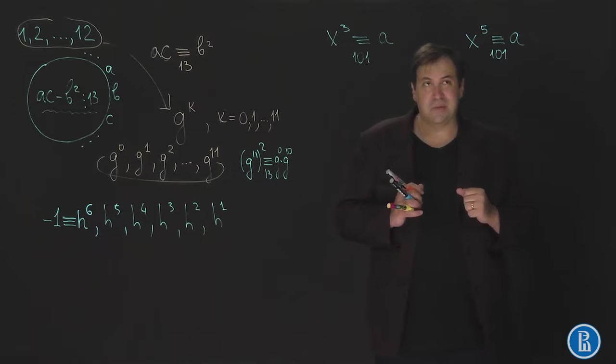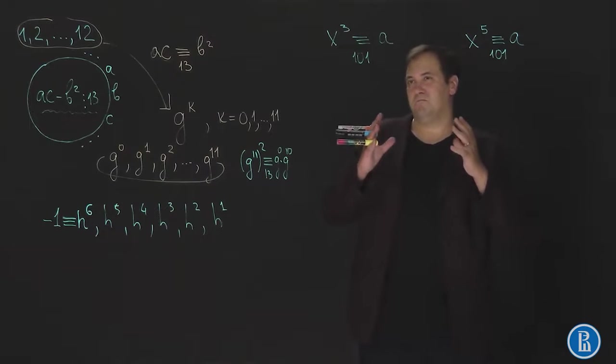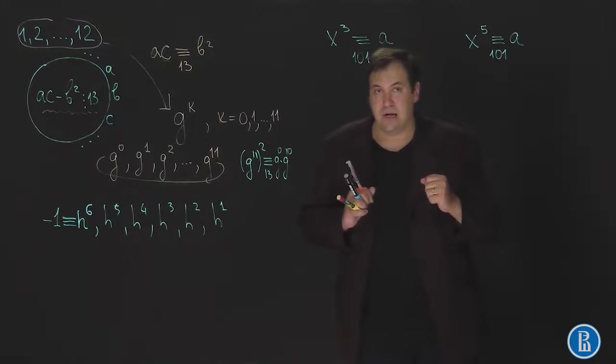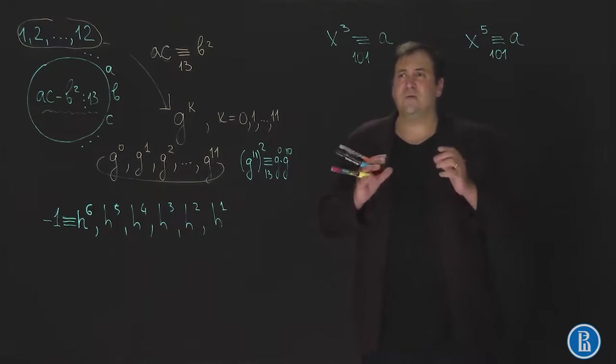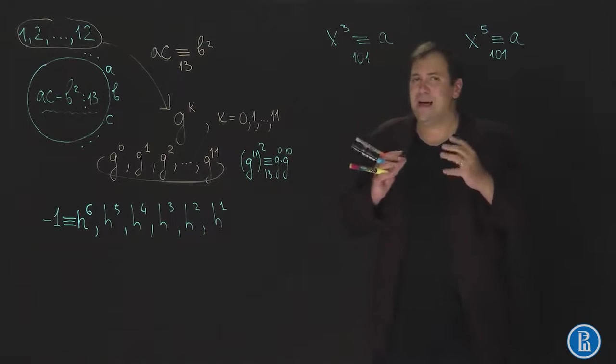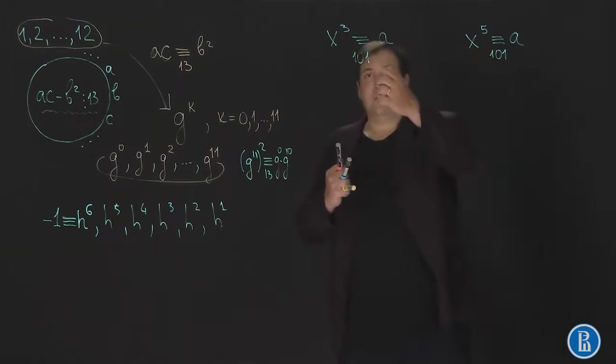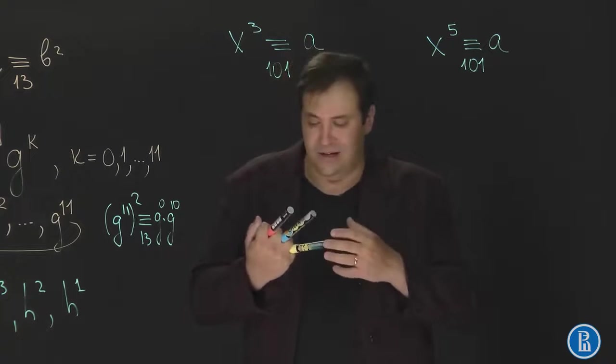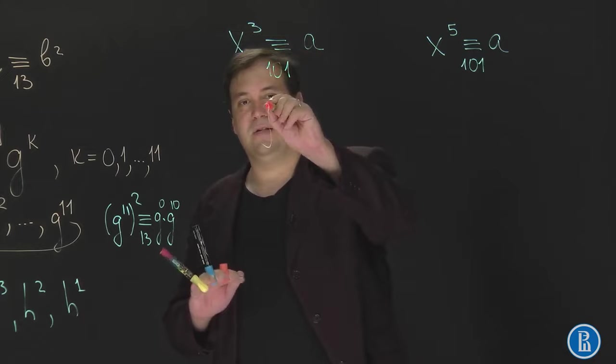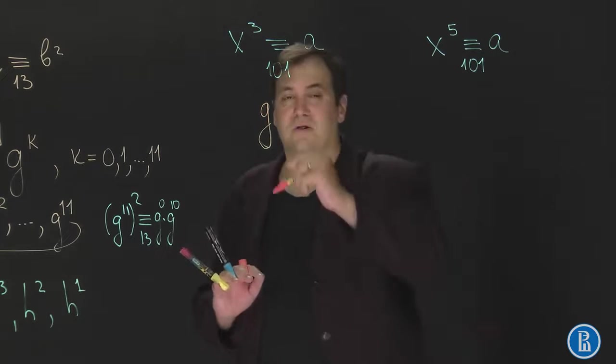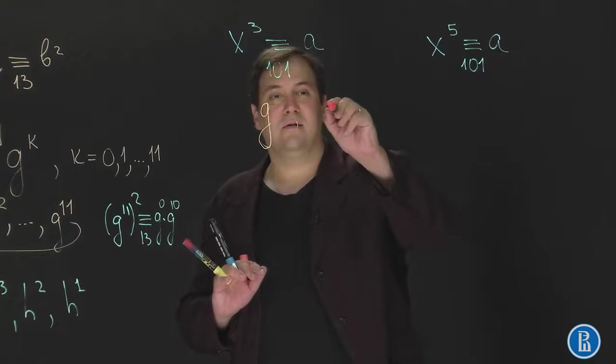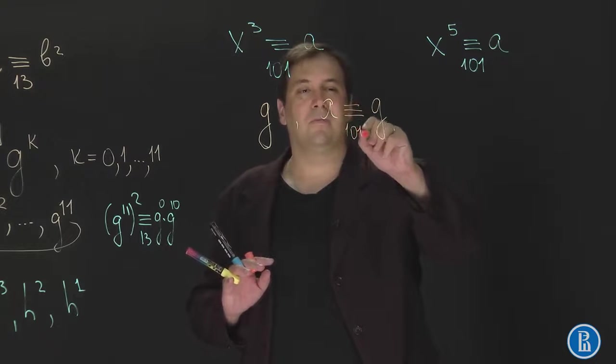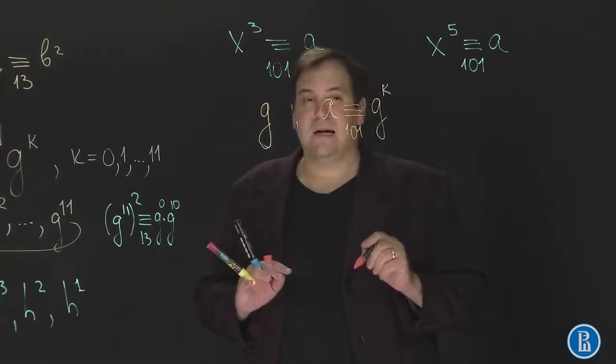Now I would like to show two more examples. Suppose you wish to determine how many a's there are such that this equation has a solution. We don't need to solve this equation. We don't need to find all such a's. We just want to know how many of them are there. Well 101 is a prime number. So we know that there is a primitive root modulo 101. Denote this primitive root as g. So let g be a primitive root modulo 101. And we know that every remainder a is congruent or equal to some power of g. And also is x.